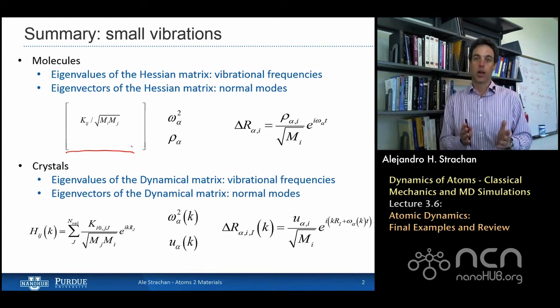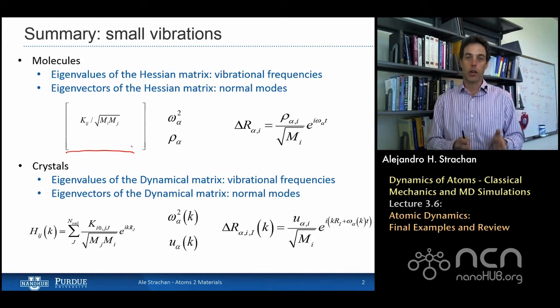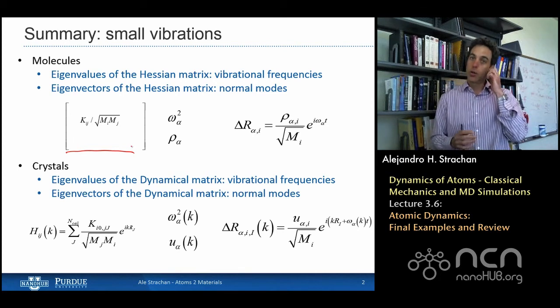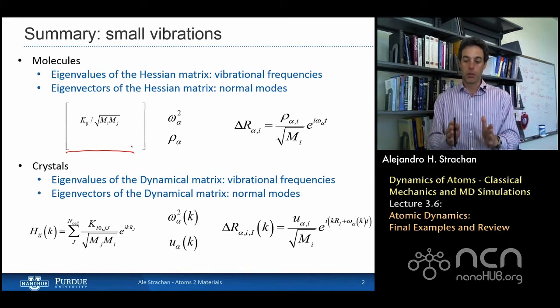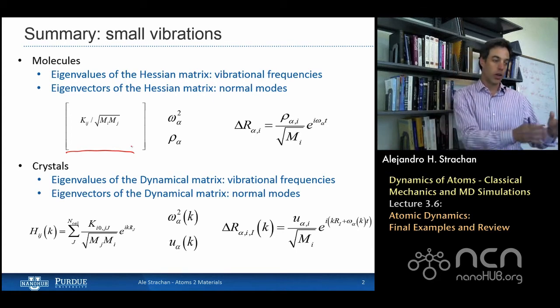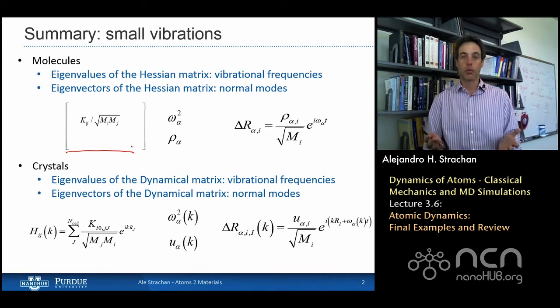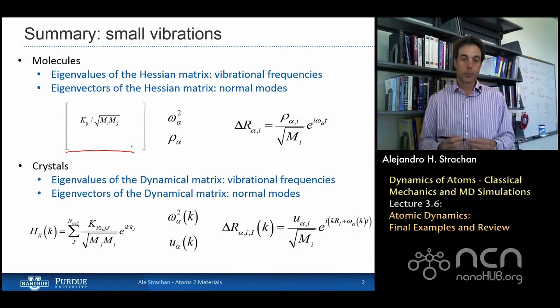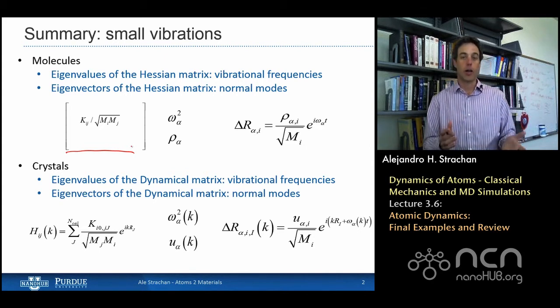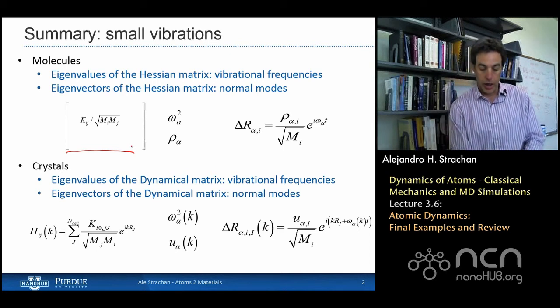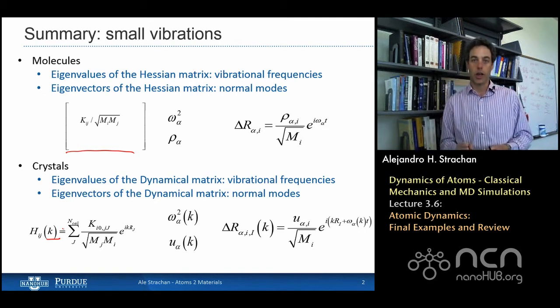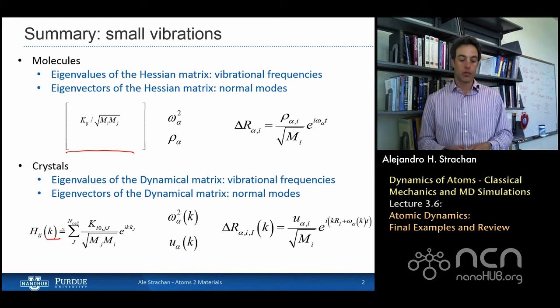In the case of crystals, the things are a little bit more complicated because I have a very large number of unit cells, so each unit cell essentially behaves like a molecule, but in order to describe how one unit cell compares to the next and to the next, we have to invoke reciprocal space k. So essentially we end up with something very similar to the Hessian matrix, it's called the dynamical matrix, and the dynamical matrix depends on k. So I need to solve, I need to diagonalize the dynamical matrix for various values of k.